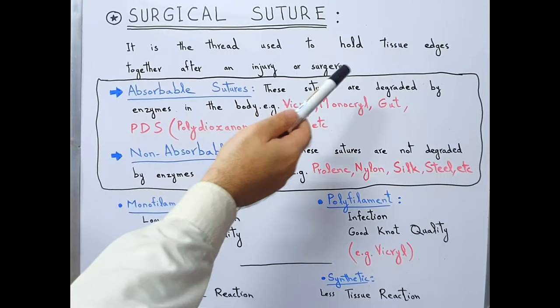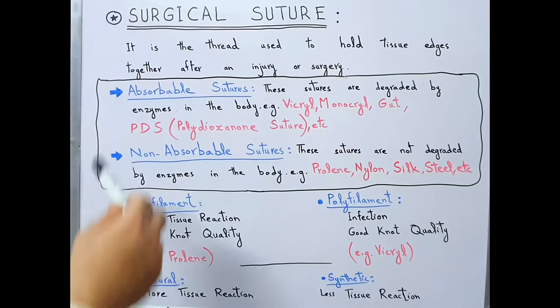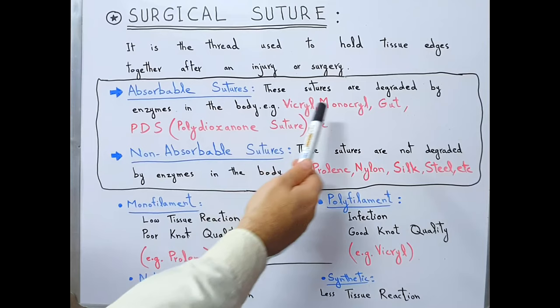Surgical Suture is the thread used to hold tissue edges together after an injury or surgery. There are various ways in which surgical sutures can be classified. The most common classification puts them into two categories: absorbable sutures and non-absorbable sutures.